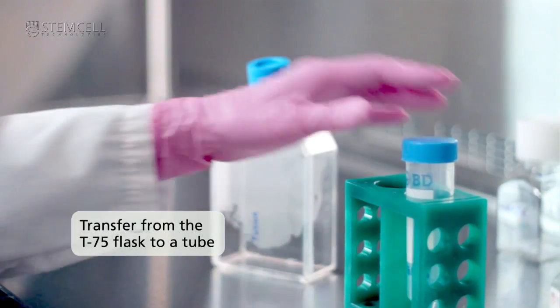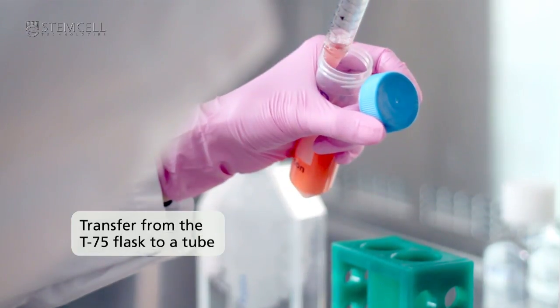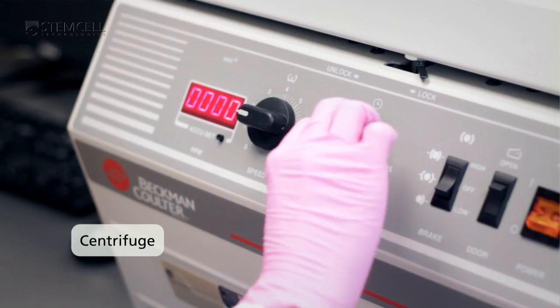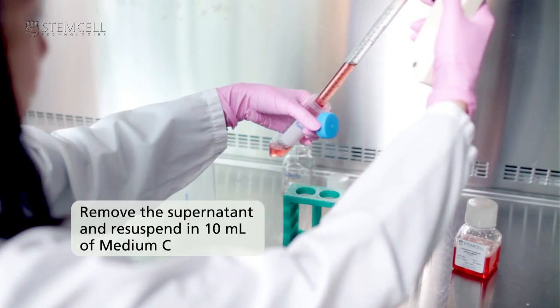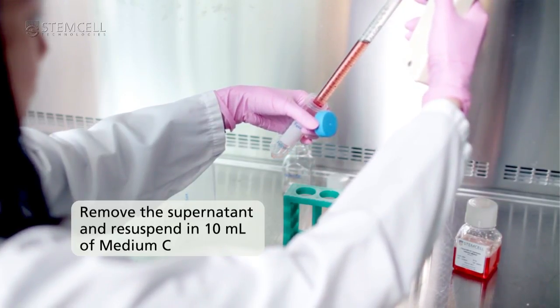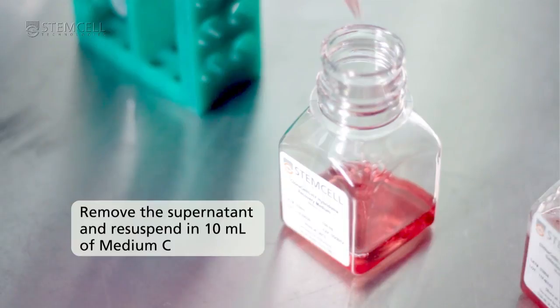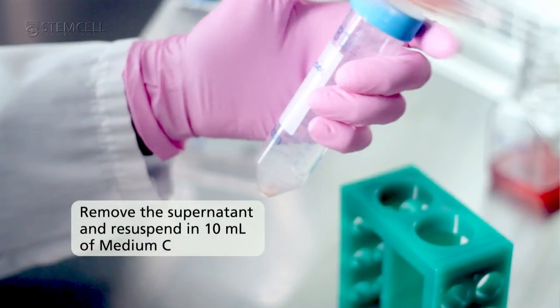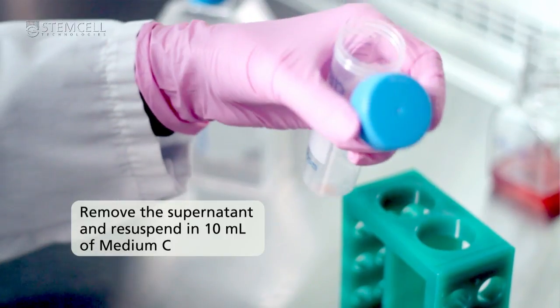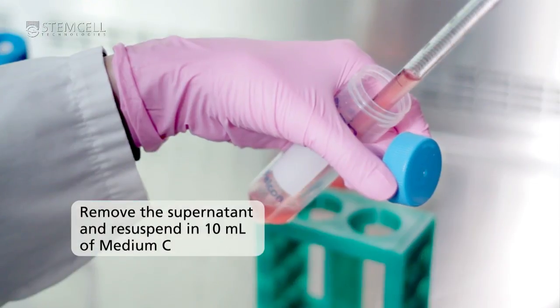Transfer the fused cells from the T75 flask to a tube. Remove the supernatant and resuspend in 10 mils of medium C. Do not exceed a volume of 10 mils at this step. Using too much or too little liquid medium will affect the viscosity of the semi-solid medium D and the growth of the colonies.